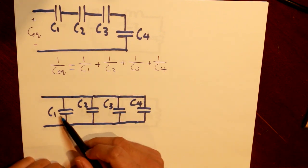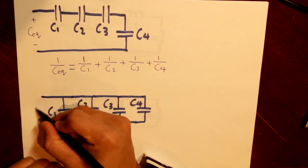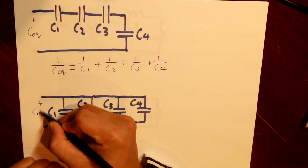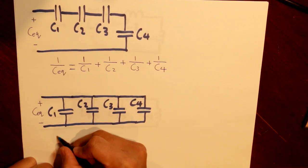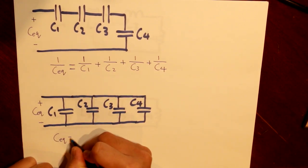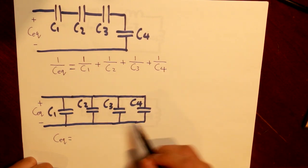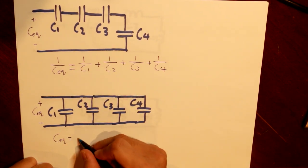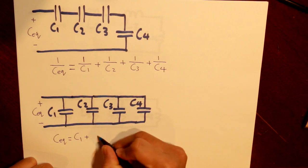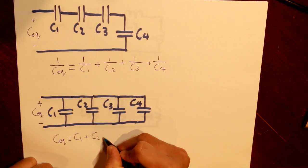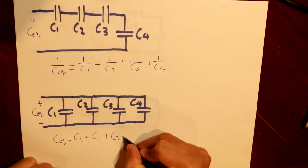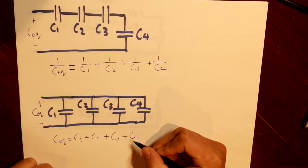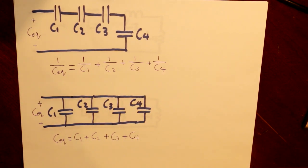When capacitors are in parallel, our equivalent capacitance is the opposite — we simply add all the capacitor values together in the numerator. That covers series and parallel combinations for capacitance in a circuit.